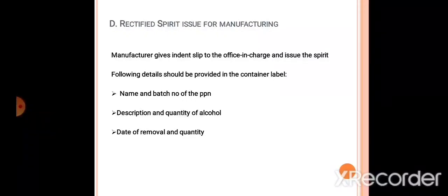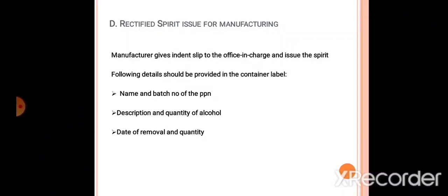The first one is the name and batch number of the preparation. We have the text forms and we will prepare it. If you have the name of alcohol, then you have the batch number, then the quantity of alcohol — the quantity that we collected — and the details are available. If you have any data that you have removed, you have the quantity. You have to specify the container. So this is the rectified spirit issue.